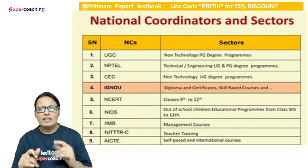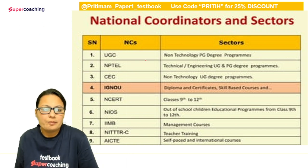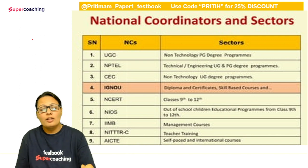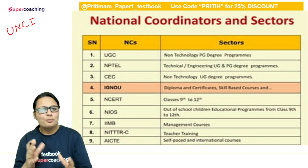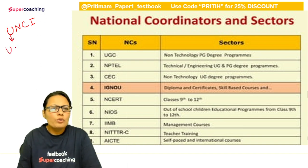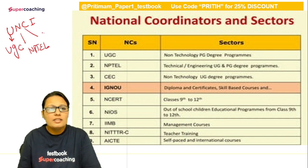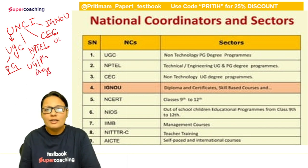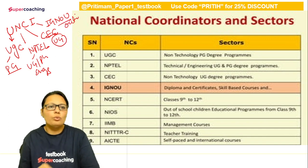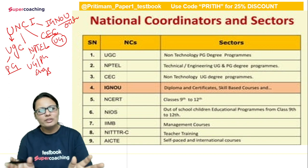इस table को याद कैसे रखेंगे? याद रखने के लिए पहला keyword है — UNC। U से UGC (PG के साथ), N से NPTEL (UG और PG, engineering), C से CEC (UG courses के साथ), और I से IGNU (out of school)। तो UNC — याद रखिए: UGC, NPTEL, CEC, IGNU।